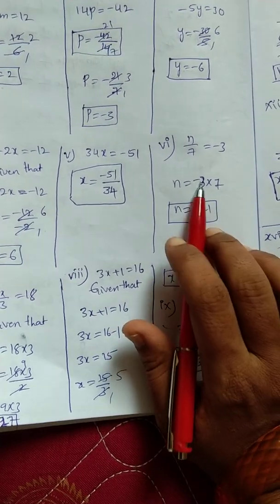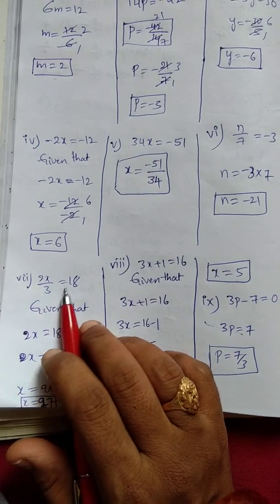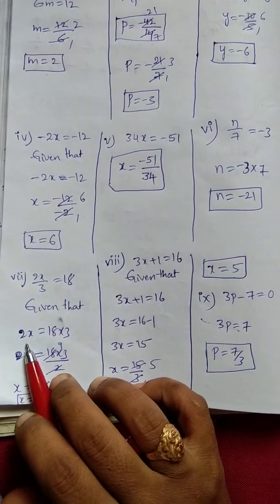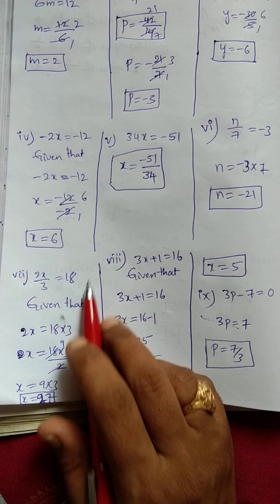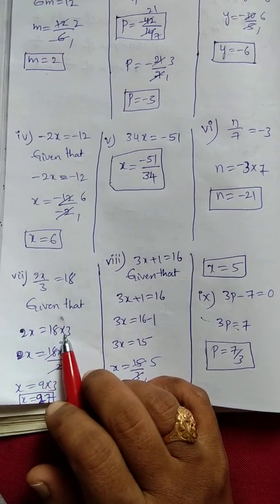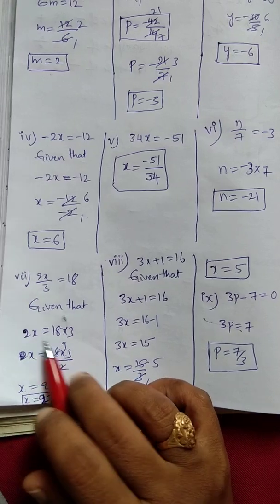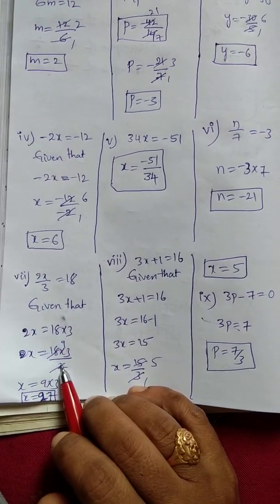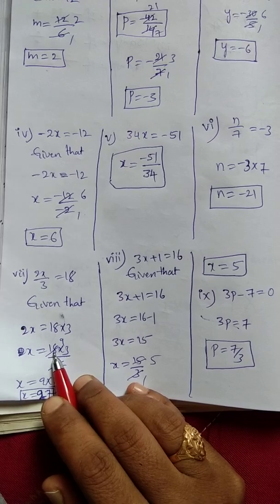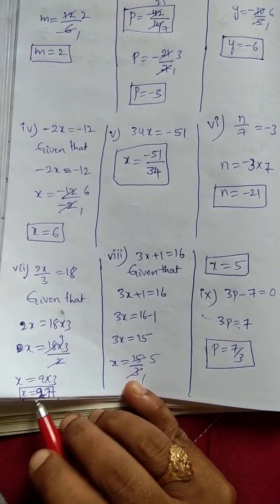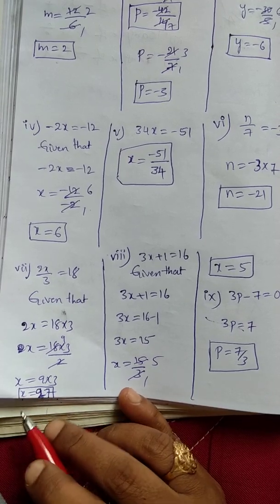Next, 2x by 3 equals 18. So 2x equals 18 into 3 — transpose of division gives multiplication. Now x equals 18 into 3 divided by 2 — transpose of multiplication gives division. 2 nines are 18, so x equals 9 into 3. x equals 27.